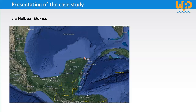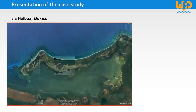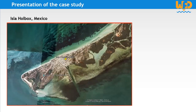Before going into the application of the Waste Flow Diagram, let's discover together the case study chosen for this video, Isla Holbox in Mexico. Isla Holbox is a peninsula located in the state of Quintana Roo and is part of the municipality of Lazaro Cardenas. The island is bordered to the north by the Caribbean Sea and to the south by a small bay, which must be crossed by boat to access the island. Isla Holbox's insular characteristics have direct consequences on the solid waste management and collection system in place.